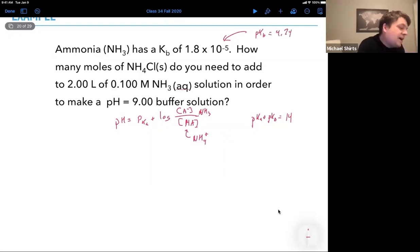And so that means the pKa of ammonium is going to be 14 minus 4.74 equals 9.26. Great.